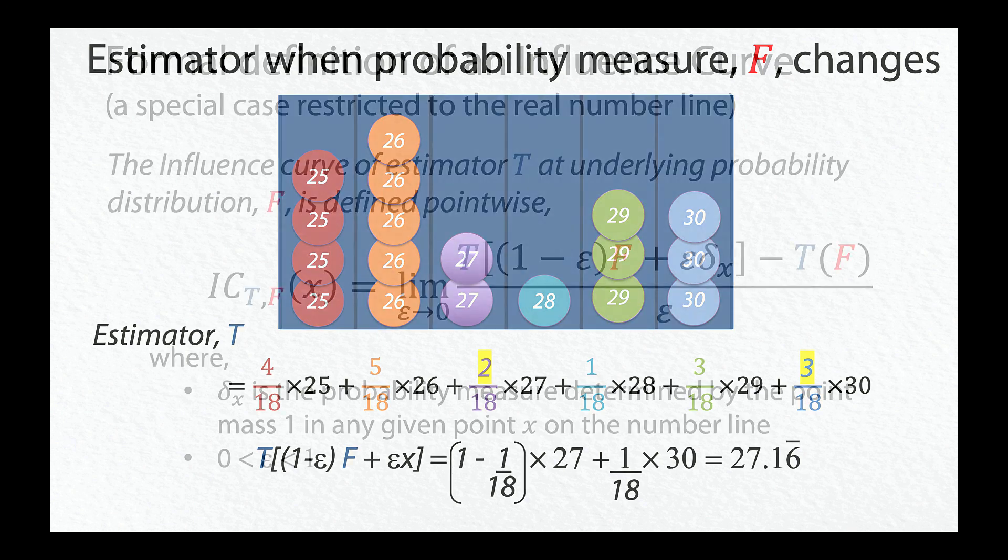Now we are ready to look at a formal definition of an influence curve in a special case restricted to the real number line. The influence curve of estimator t at underlying probability distribution f is defined point-wise as the limit when epsilon approaches 0 of the difference between the estimator applied to the mixture distribution and the estimator applied to the original distribution, divided by epsilon, the strength of the mixture. In this notation, delta x is the probability measure determined by the point mass 1 at any given point x on the number line.